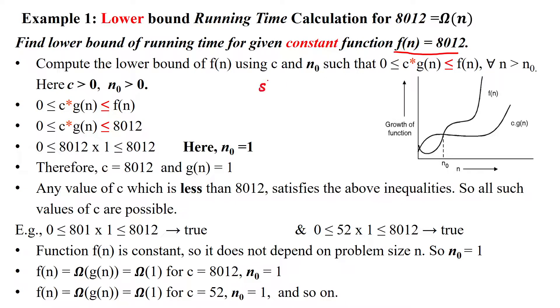It can be asked: show that 8012 equals big omega of n. So the question can be asked in this format also. Here, for lower bound calculation, as per the given procedure,